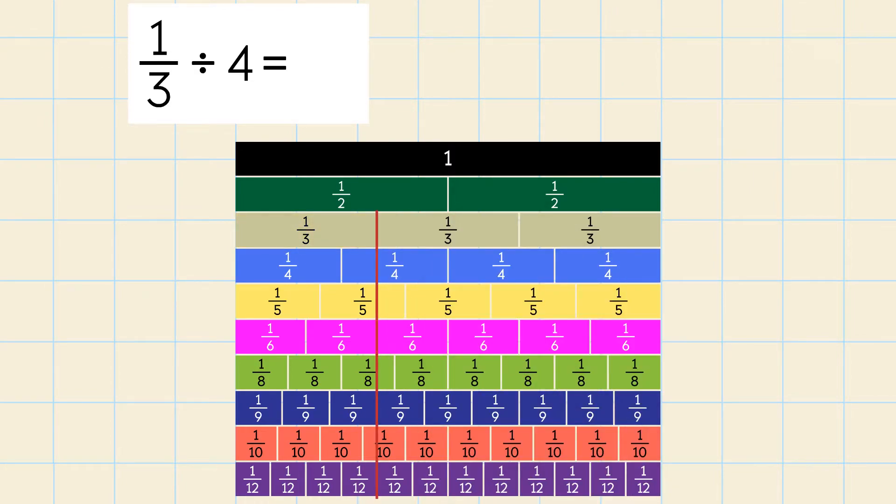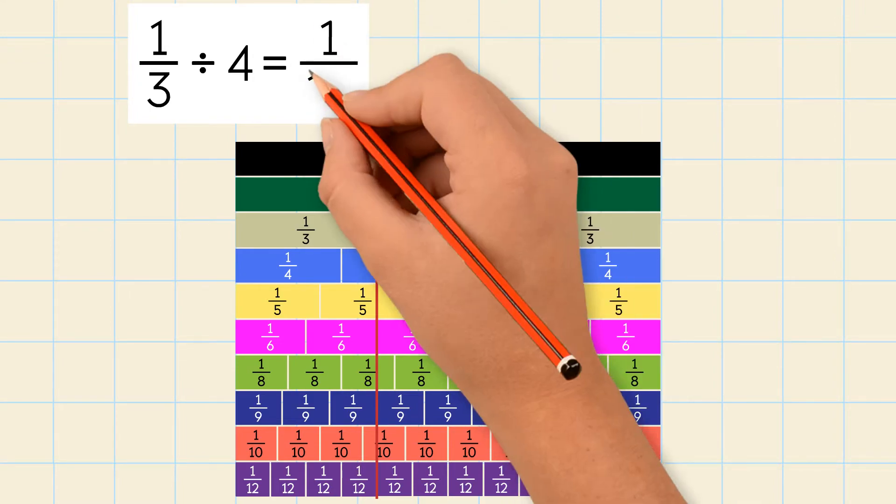Find 4 fraction strips that fit exactly under the 1 third strip. 4 twelfths fit exactly under the 1 third strip. So the quotient is 1 twelfth.